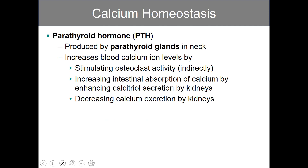Parathyroid hormone, or PTH, is produced by the parathyroid glands located within the neck. PTH increases blood calcium levels by stimulating osteoclastic activity. As osteoclasts are stimulated — remember, clasts are the bone cell that dissolves matrix — as bone matrix is being dissolved, calcium is liberated, and that's going to increase blood calcium ion levels.